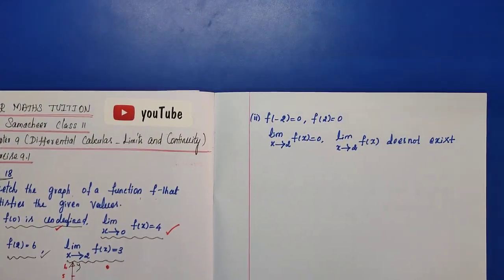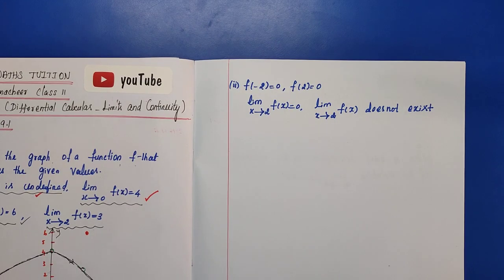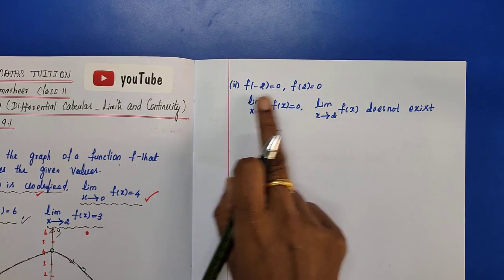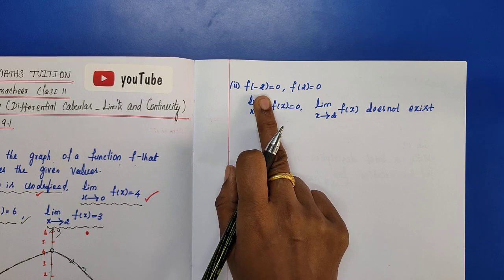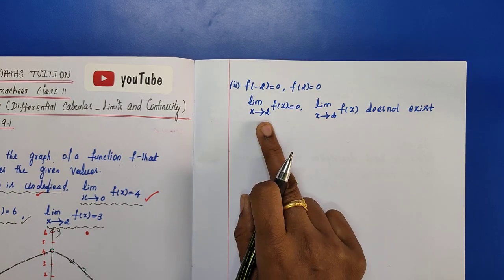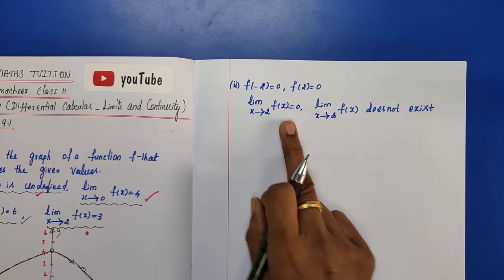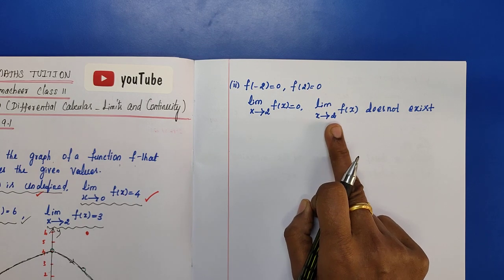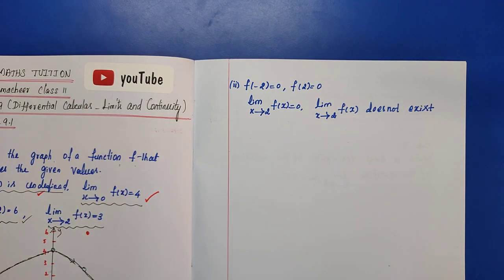Now for the second part of the problem, we have a new set of 4 conditions: f(minus 2) equals 0, f(2) equals 0, limit as x tends to 2 of f(x) equals 0, and limit as x tends to 2 of f(x) does not exist. Let's draw the corresponding graph.